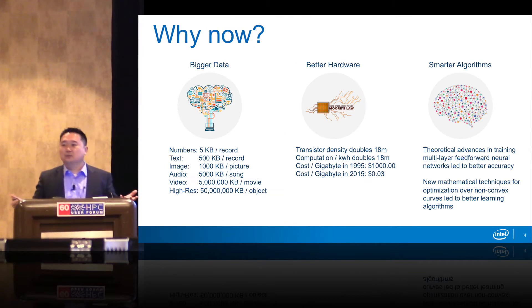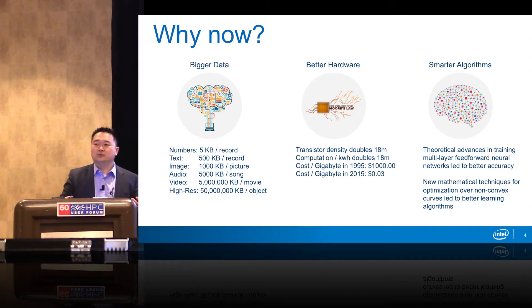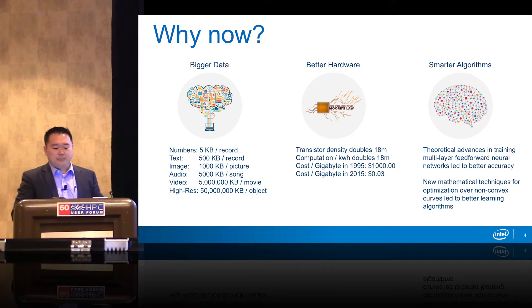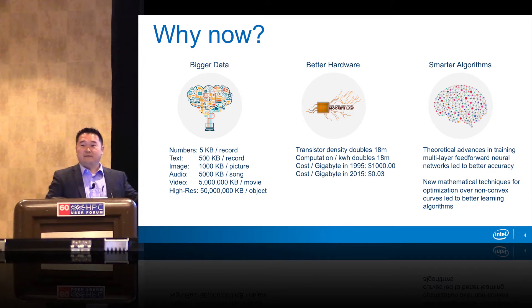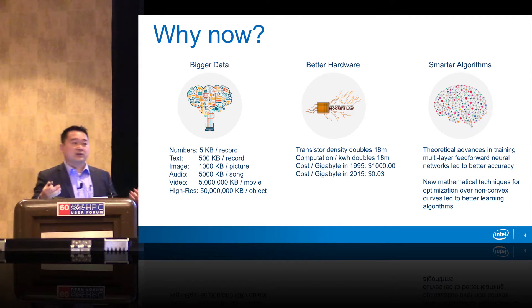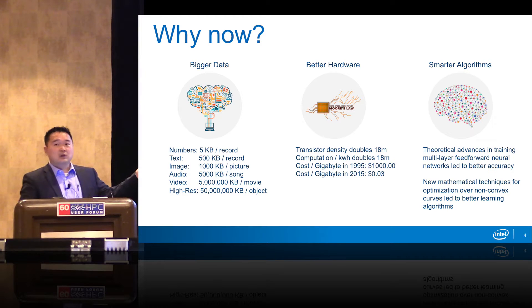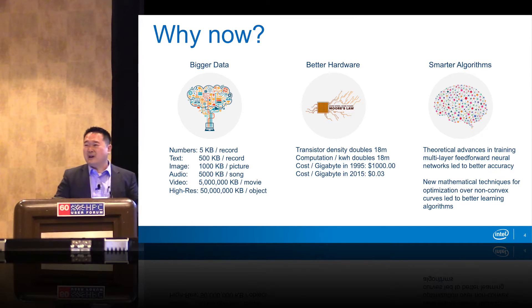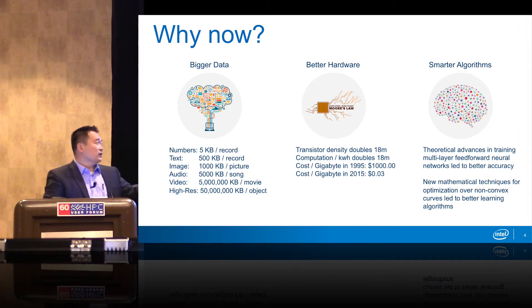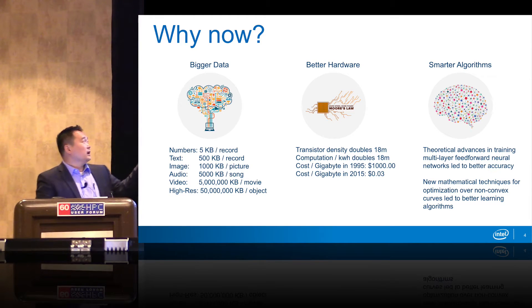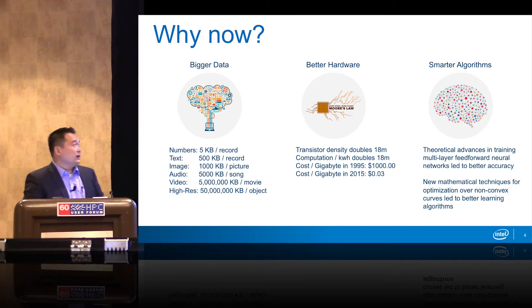We had to ask ourselves, why now? Why is this important for everyone today? There are three things. First, bigger data — previously numbers were five kilobytes per record, but high resolution video is driving 50 million kilobytes per object, and with 4K that's going to grow exponentially. Second, better hardware — transistor densities and computation is doubling about every 18 months, and the cost per gigabyte went from about $1,000 in 1995 to three cents last year.